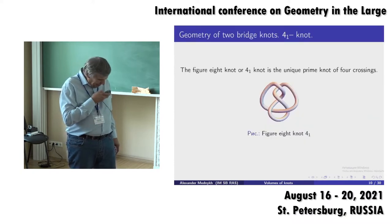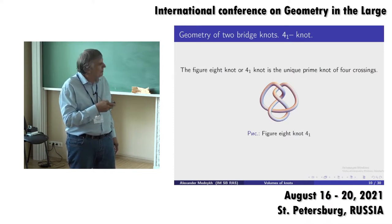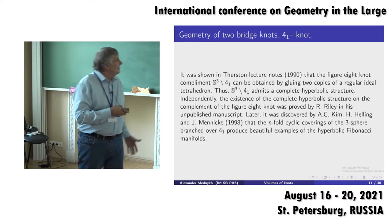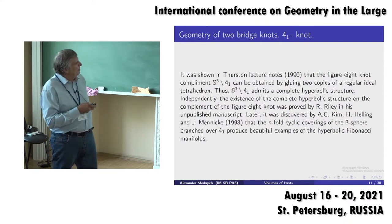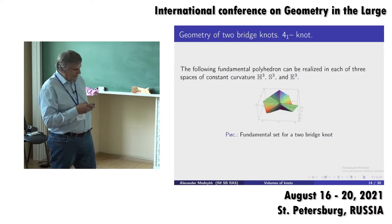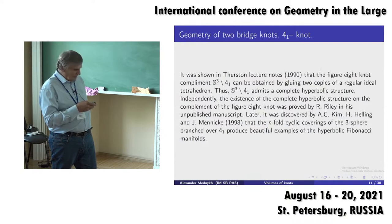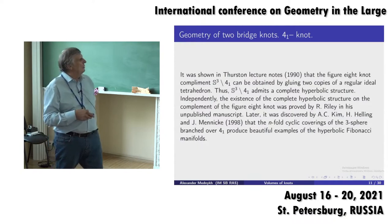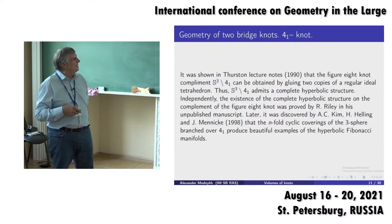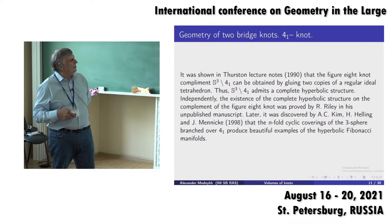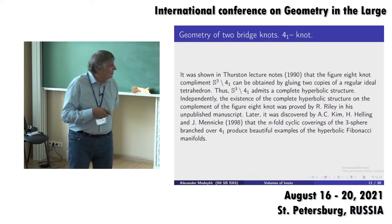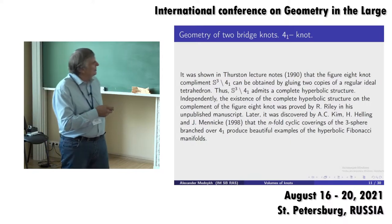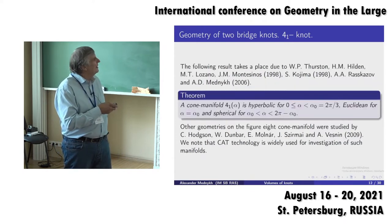Now we consider the figure-eight knot, which was also mentioned in the previous lecture. It has a hyperbolic structure on its complement. Some years ago, it was shown by Kim, Helgason, and Mennicke that the n-fold branched covering over the figure-eight knot gives a beautiful example of hyperbolic Fibonacci manifolds. So the investigation of geometrical structures on the figure-eight knot has a certain significance.